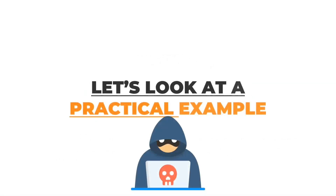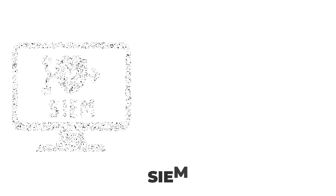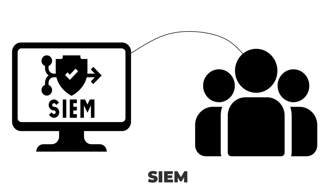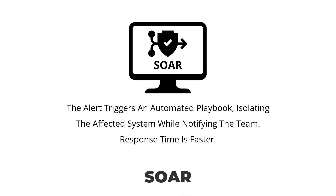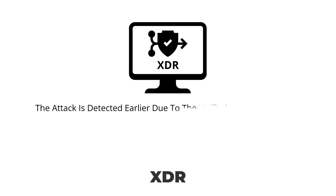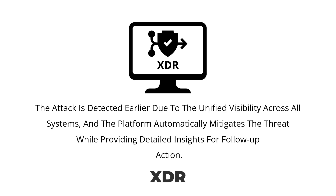Let's look at a practical example. Imagine a hacker attempts to breach your organization's network by exploiting a vulnerability. With SIEM, the system identifies unusual activity and alerts your team, and your analysts investigate and manually address the threat. With SOAR, the alert triggers an automated playbook, isolating the affected system while notifying the team — response time is faster. With XDR, the attack is detected earlier due to unified visibility across all systems, and the platform automatically mitigates the threat while providing detailed insights for follow-up action.